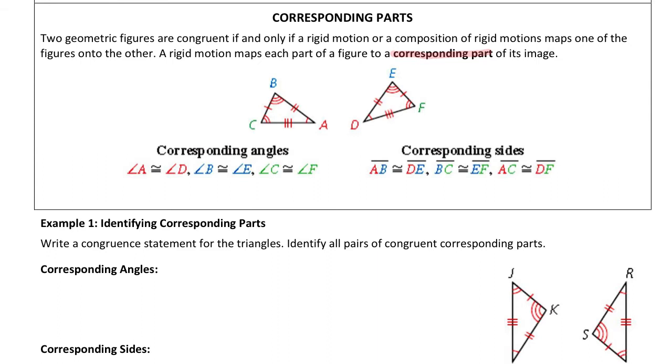If I'm naming these triangles, or if I'm making what's called a congruence statement, I would say that triangle ABC is congruent, using that congruence notation there, that is congruent to DEF, triangle DEF.